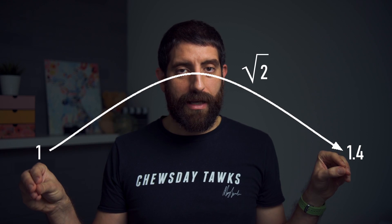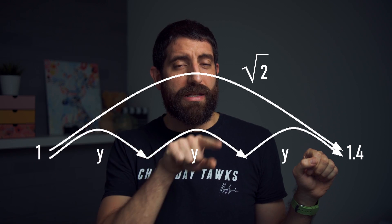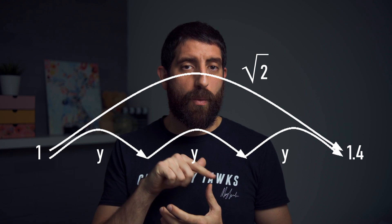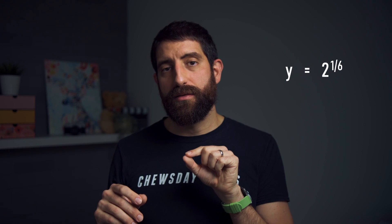Now let's do the same but with thirds. Again jumping from here to there — it's a square root of 2 multiplication — and here I'm now multiplying by y and y and y, because we do three jumps. So y cubed has to be the square root of 2. If I divide the powers on each side of the equation by 3, now I have y equals 2 at the power of 1/6, so the sixth root of 2. And that's how it goes.